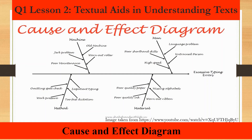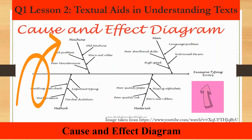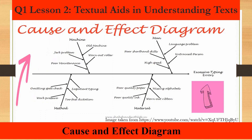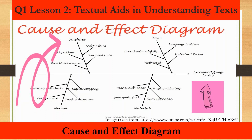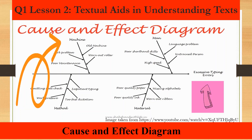Here is a more concrete example of the Ishikawa diagram. As you can see, the problem is excessive typing errors, and the causes are machine, man, method, and material. Meanwhile, the small arrows show more specific root causes of the above-mentioned four causes.